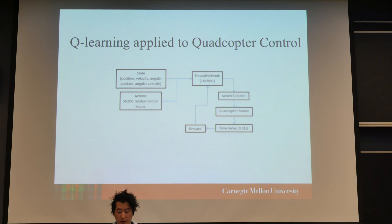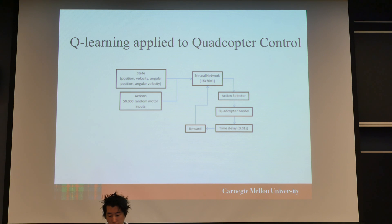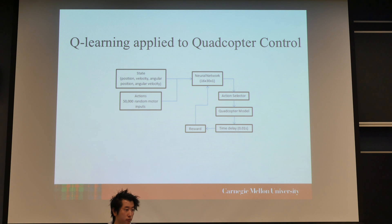In MATLAB, we have implemented this as a neural network with 16 input neurons, 30 hidden layer neurons, and one output neuron. We give the neural network our state, which is position and velocities, angular positions and angular velocities, and also 50,000 possible actions, which are essentially the motor inputs. We observe the output of the neural network and use an action selector to select the best action from all the Q values. We also fuzz the action to trade off between exploration and exploitation, exponentially favoring exploitation as our agent gets better. We apply our action to the quadcopter model and observe after 0.01 seconds the reward it gains. The reward is a function of its error in space from its position and also some regularization.